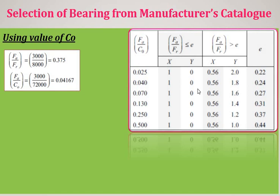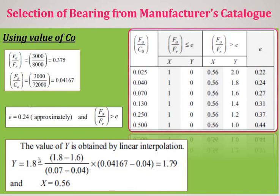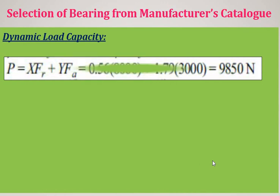For the Y value, we interpolate between FA/CO = 0.040 (Y = 1.8) and FA/CO = 0.070 (Y = 1.6). For our FA/CO = 0.04167: Y = 1.8 − [(1.8 − 1.6)/(0.07 − 0.04)] × (0.04167 − 0.04) = 1.79. Using this refined value with X = 0.56 and Y = 1.79: P = 0.56×8000 + 1.79×3000 = 9850 N.